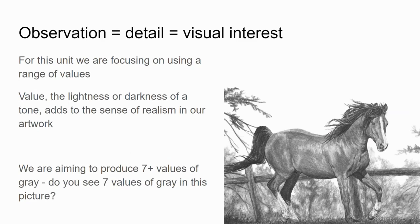For this unit we're focusing on using a range of values and careful observational drawing with our gridding tool. Value is the lightness or darkness of a color or tone, and it adds to the sense of realism in our artwork. We want to try to produce seven or more values of gray from the darkest dark you can make to the lightest light that you can make. Do we see seven values of gray in this picture?